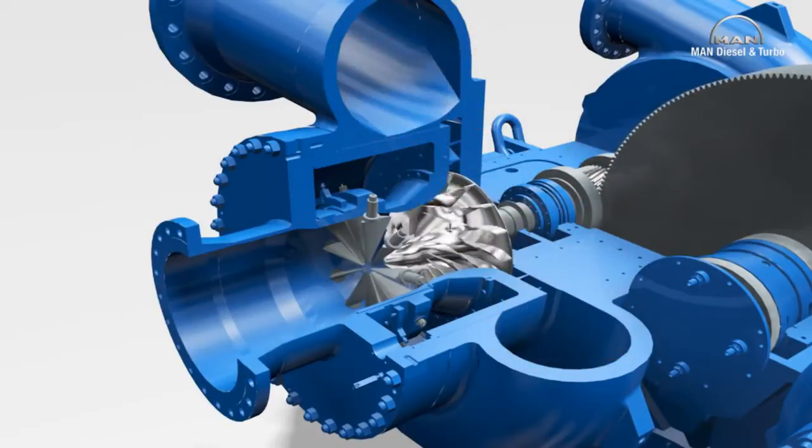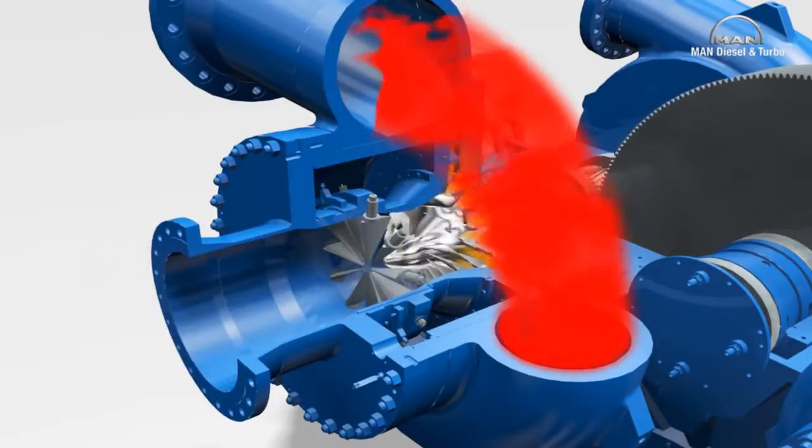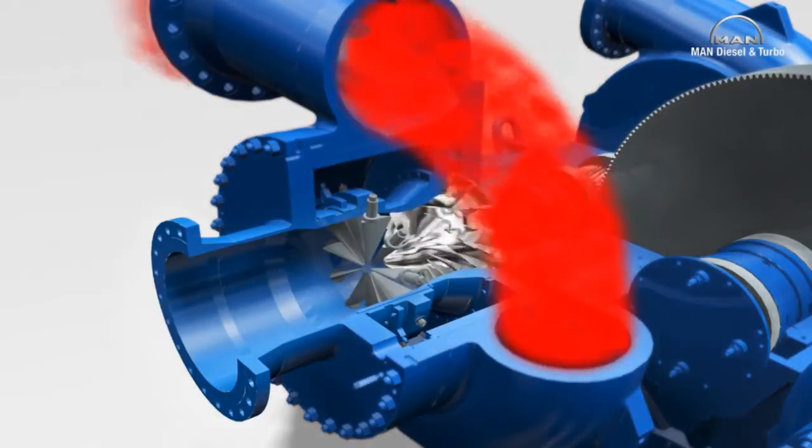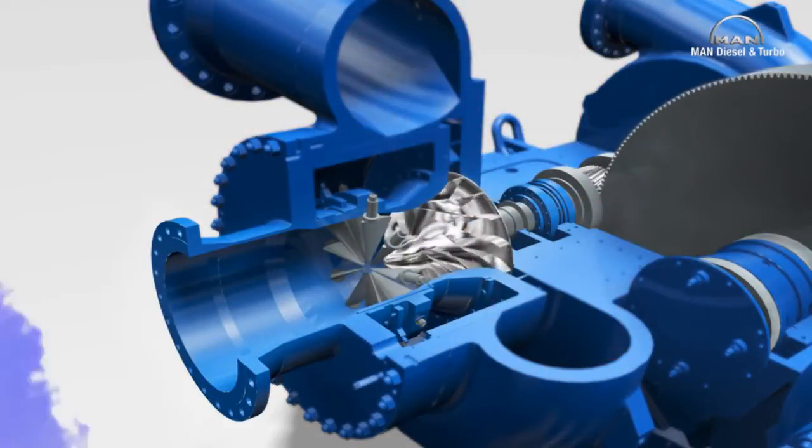Whether dry or humid air, refrigerant, nitrogen, carbon monoxide, or dioxide, the rotating impeller sucks the respective process gas through the inlet guide vane unit.